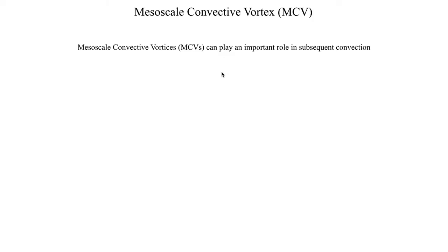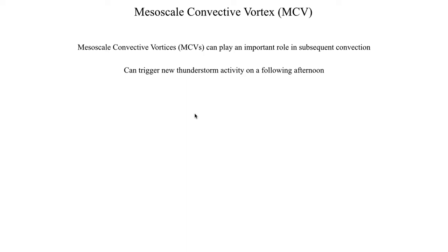This basically results in a small area of low pressure — sort of a mini cyclone — and these can play an important role in the subsequent development of convection. Acting like a little cyclone, this is an area where you have rising motion, which can trigger new thunderstorm activity, but you've also got fairly strong directional wind shear. And if you've got strong directional wind shear, that can carry a risk for tornadoes.